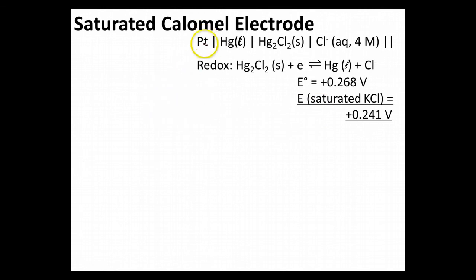Okay, so let's go through the process here. Platinum wire, then we're going to have some liquid mercury. Then we're going to have the calomel powder in that, or at least in contact with that.